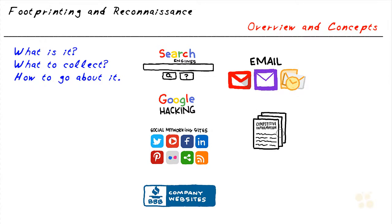We can also gather information through competitive intelligence, which we can use to identify, analyze, and verify information about a company's competitors. One benefit is that providers of competitive intelligence don't really expect it to be a hacker gathering that information for a compromise — it could just be another company researching the competition. Sources include companies that specifically provide competitive intelligence, the company's own website, press releases, trade journals, patents or trademarks, and customer testimonials or vendor interviews.